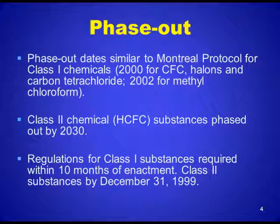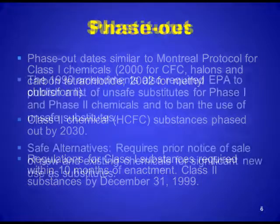Class II chemical substances had to be phased out by 2030. Regulations for Class I substances were required within 10 months of enactment. Class II substances had to be regulated by December 31, 1999. The 1990 Amendments also required EPA to publish a list of unsafe substitutes for Class I and Class II chemicals and to ban the use of unsafe substitutes.